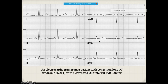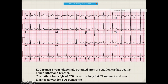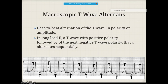On the ECG, you will notice the QT is pretty prolonged. In one ECG, the T wave appears biphasic and notched — that is long QT type 2. In another ECG, the T wave is narrow followed by an isoelectric interval and then a P-U wave — that is long QT type 3, associated with SCN5A mutation.